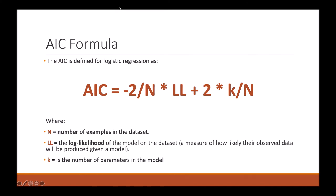The AIC is defined for logistic regression as AIC = -2/N * LL + 2 * k/N, where N equals the number of examples in the dataset, LL equals the log-likelihood of the model, which is a measure of how likely the observed data will be produced given a model, and k equals the number of parameters in the model.